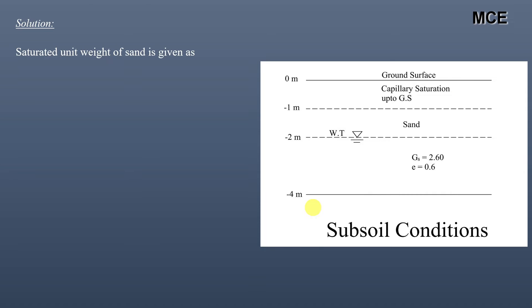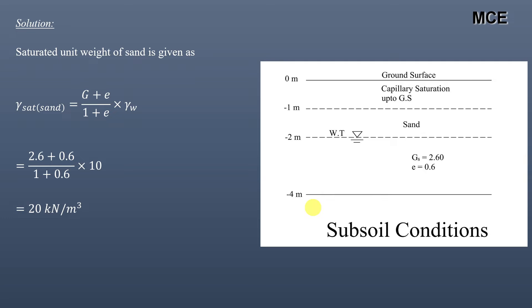Before finding the stresses, we first find the unit weight of this sand. The saturated unit weight of sand is given as: γ_sat = (G + e) / (1 + e) × γ_w. So it will be (2.6 + 0.6) / 1.6 × 10, which equals 20 kN/m³ — the saturated unit weight of sand. Now we can find the stresses at different depths of the soil.